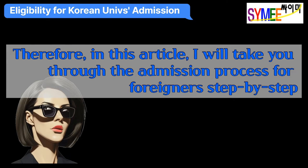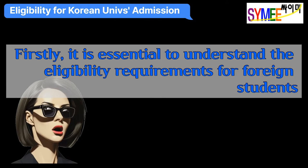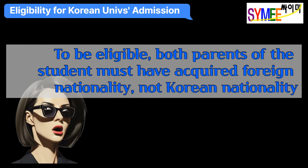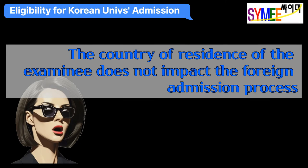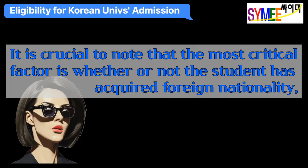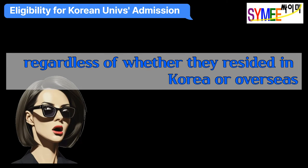Therefore, in this article, I will take you through the admission process for foreigners step by step. Firstly, it is essential to understand the eligibility requirements for foreign students. To be eligible, both parents of the student must have acquired foreign nationality, not Korean nationality. The country of residence of the examinee does not impact the foreign admission process. The most critical factor is whether or not the student has acquired foreign nationality, regardless of whether they resided in Korea or overseas.